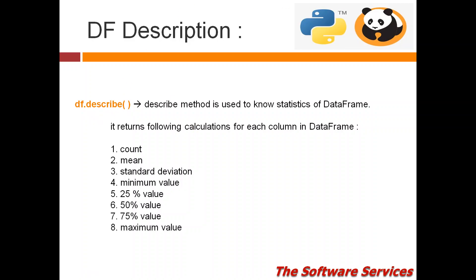It is very important to know about the data available in our data frame — the maximum value and minimum value available in a particular column. In data analysis stages and data science projects, we need to know all these things, especially when analyzing records for outliers. Outlier means something that is not a general thing but a special case. All these things will be displayed using the describe method.